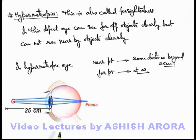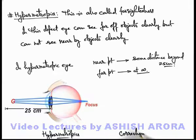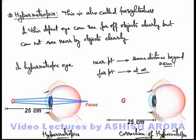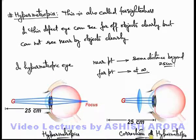Now, how can we correct hypermetropia? For correction of hypermetropia, a converging lens is used. When light rays from nearby objects fall on a hypermetropic eye, they converge to a point behind the retina. But if a converging lens spectacle is used in front of the eye, the light rays converge before falling on the eye lens, so finally the light rays are focused at the retina and a clear image can be seen. So for correction of hypermetropia, converging or convex lenses are used in spectacles.